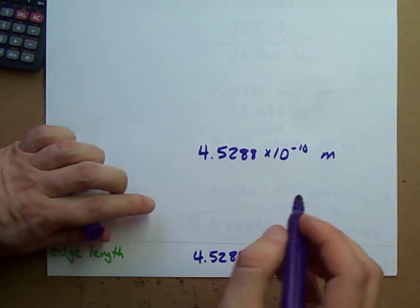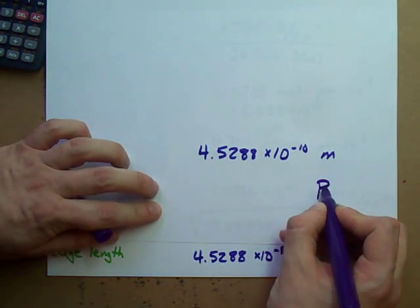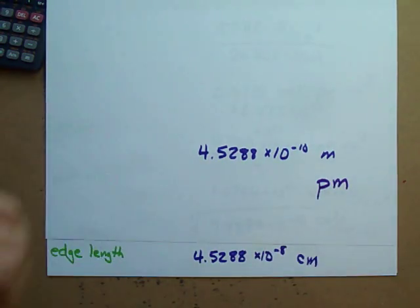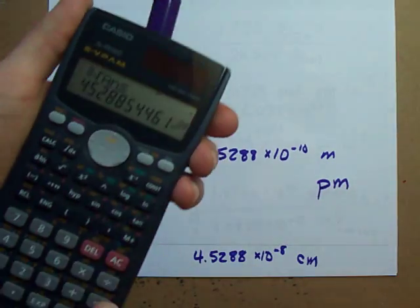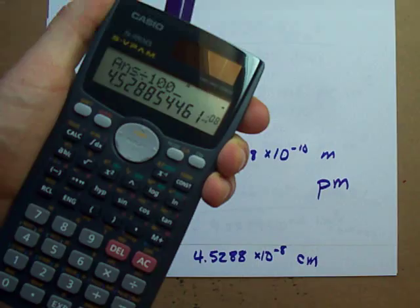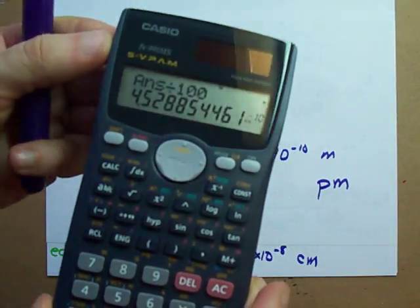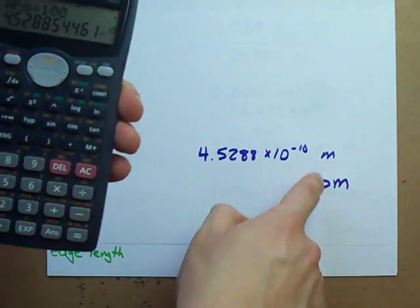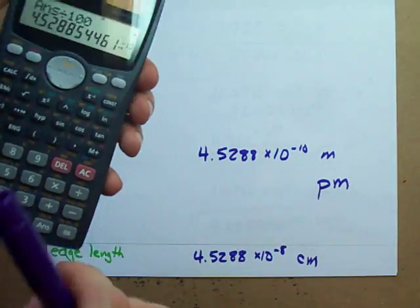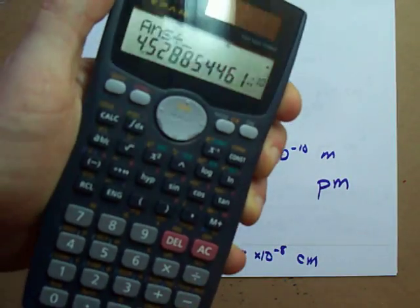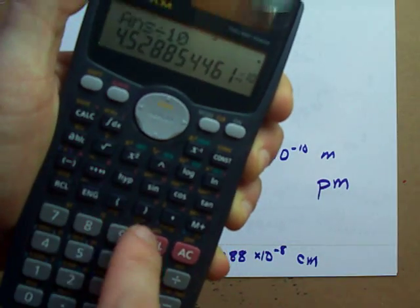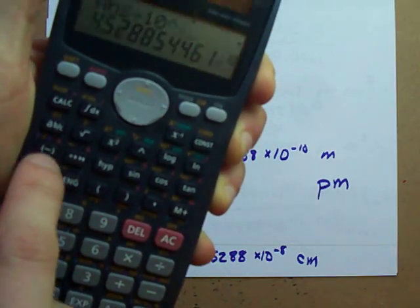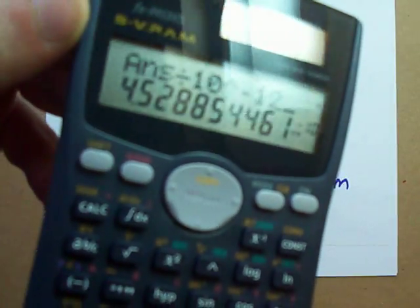This is the same as 4.5288 times 10 to the negative 10 meters. And then, the most common unit to use for unit cell width is picometers. To convert to picometers, you have to divide by 10 to the power of negative 12.